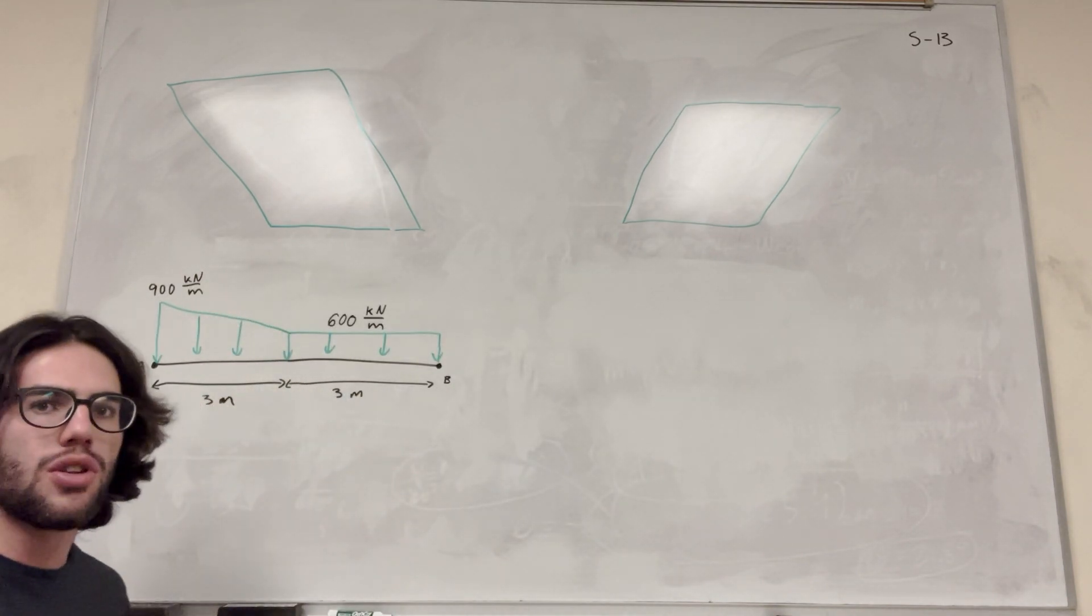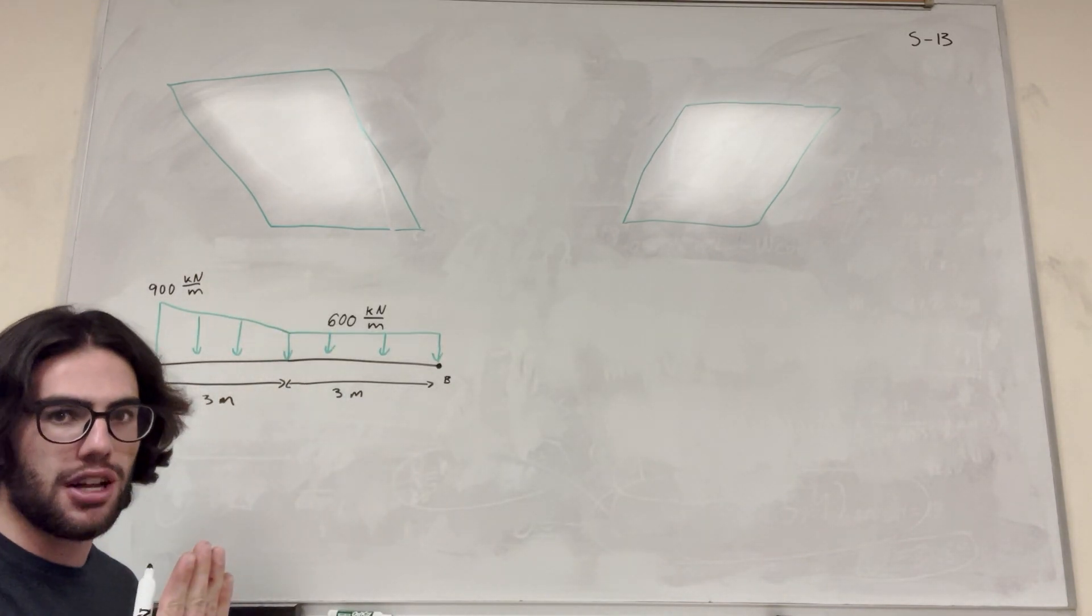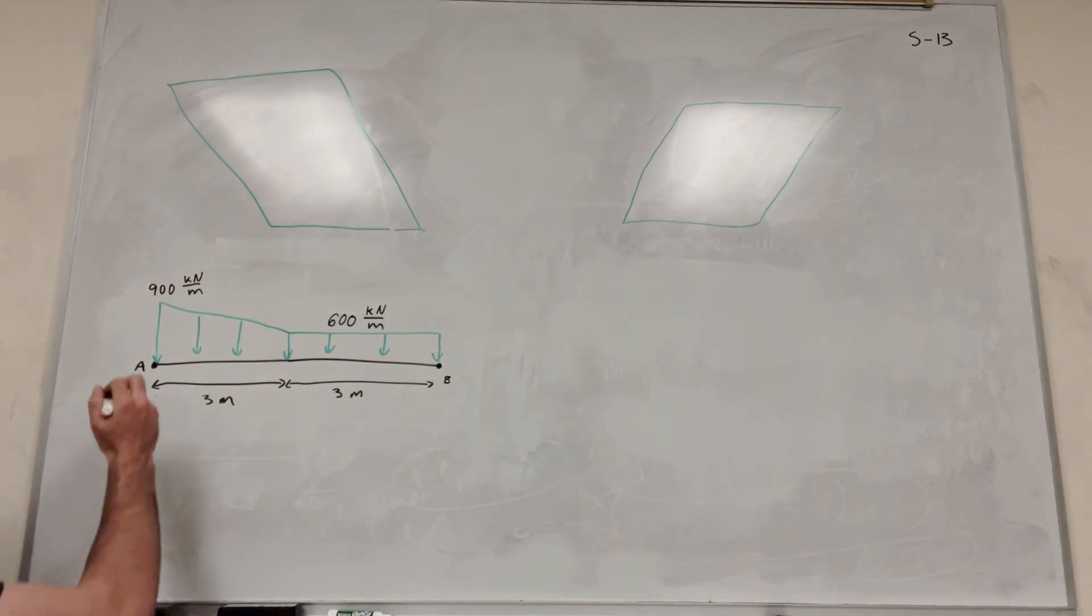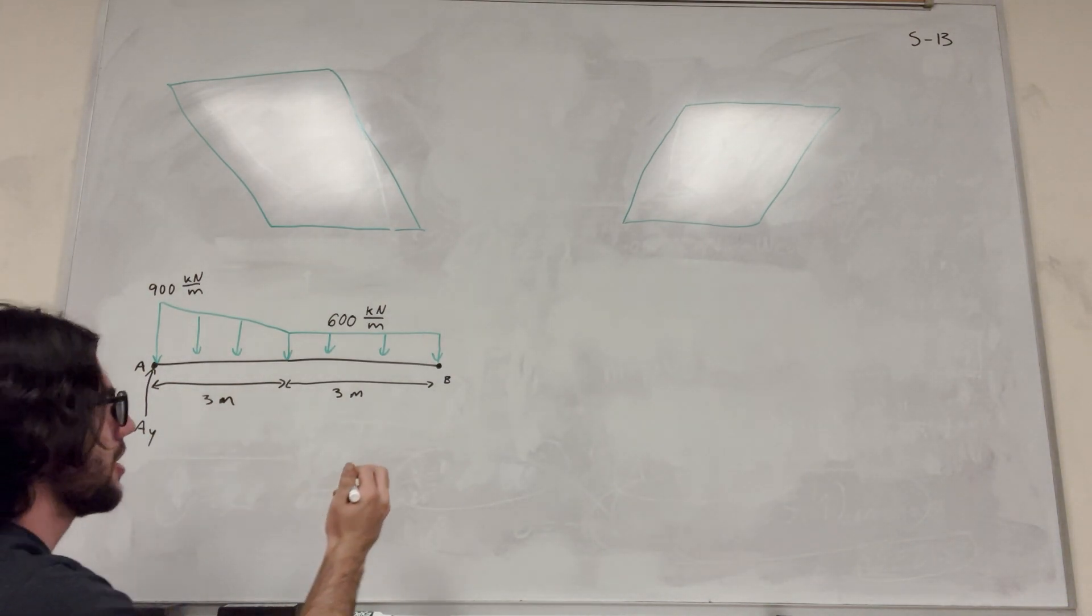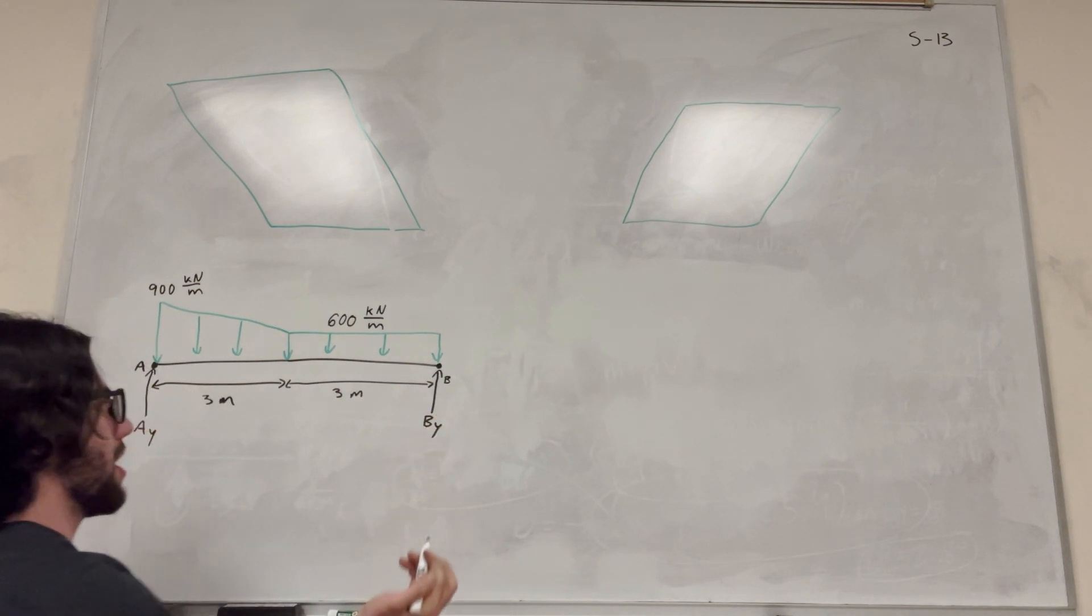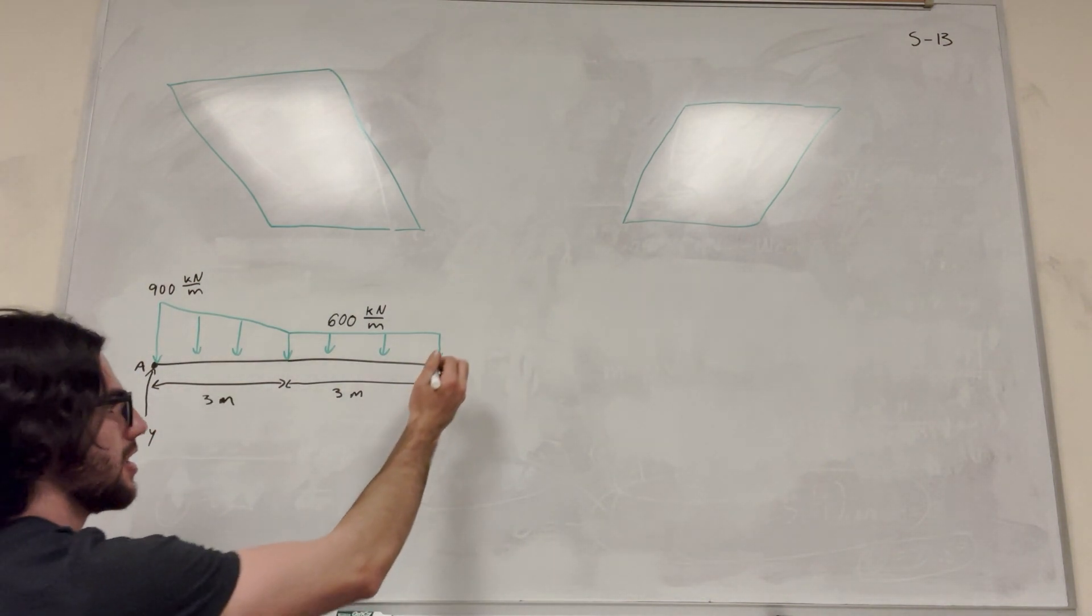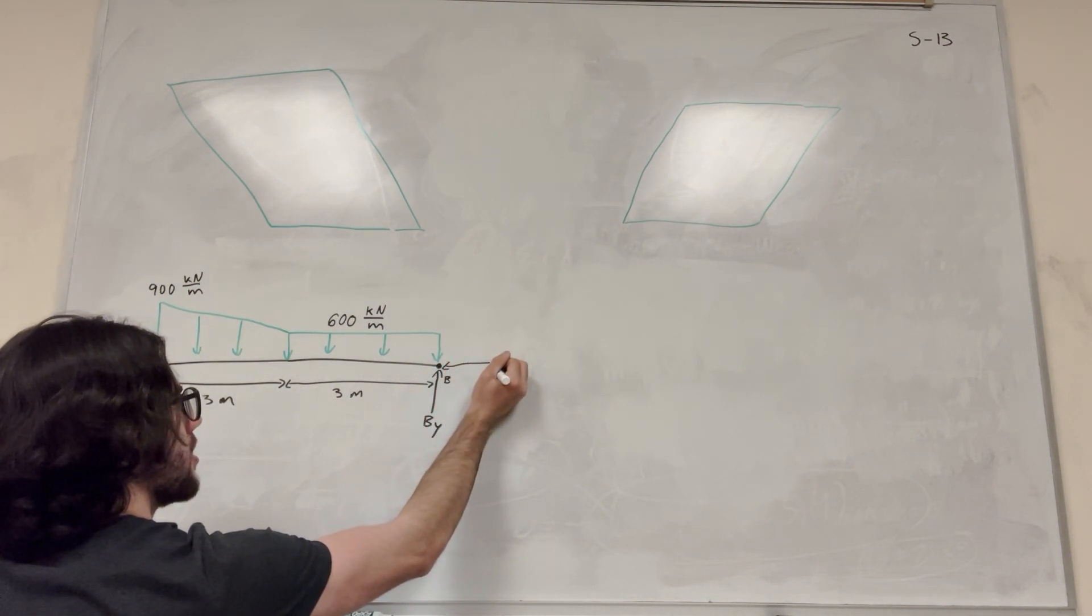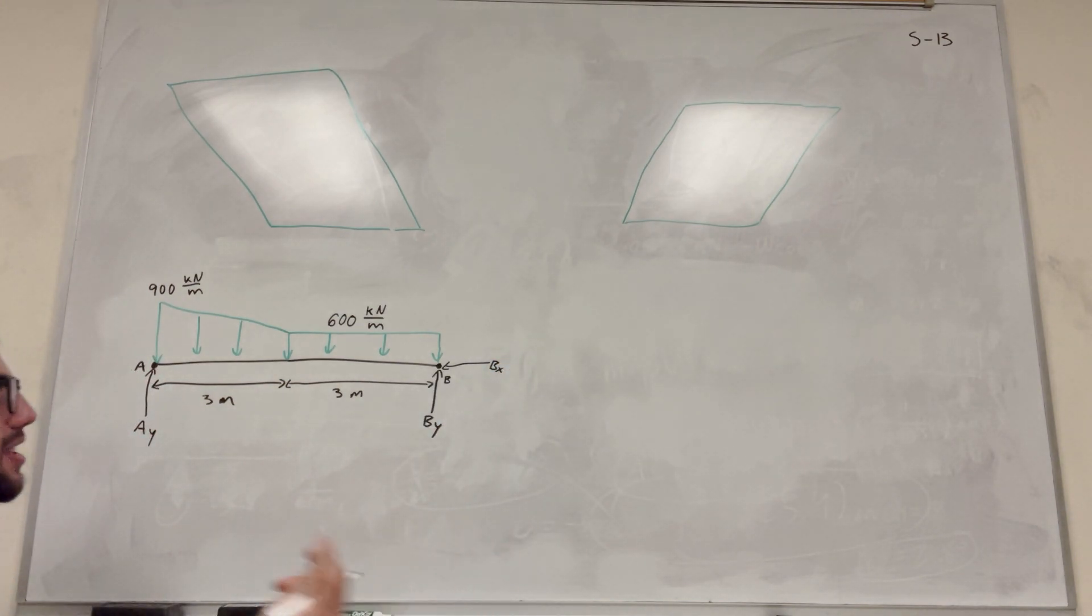Well, if you have a roller, a roller only has one force and that acts perpendicular to the surface. So we know that at A we're going to have one force that points upward, A_y. Then at B we're also going to have B_y and because B is a pin it also has B_x. We don't know which way B_x is pointing, but we can just draw it in there and figure it out later. So we have three unknowns and let's see if we can figure out any of them.